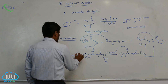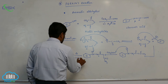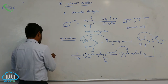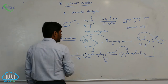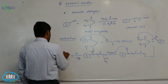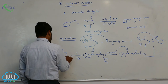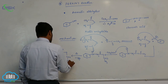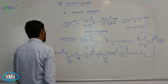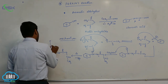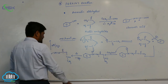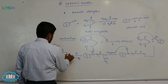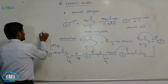On heating, loss of a water molecule takes place, forming CH double bond CH, then C double bond O oxygen, C double bond O, CH3. This on acidic hydrolysis gives synomic (cinnamic) acid.